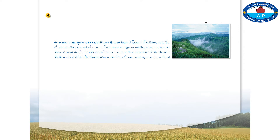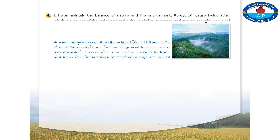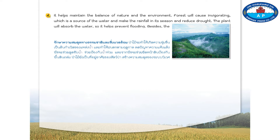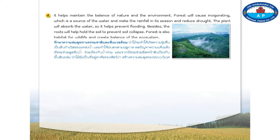Number four, it helps maintain the balance of nature and the environment. Forest will cause invigorating conditions, which is a source of water and makes rainfall in its season and reduces drought. The plants will absorb water so it helps prevent flooding. Besides, the roots will help hold the soil to prevent soil collapse. Forest is also a habitat for wildlife and creates balance of the ecosystem.